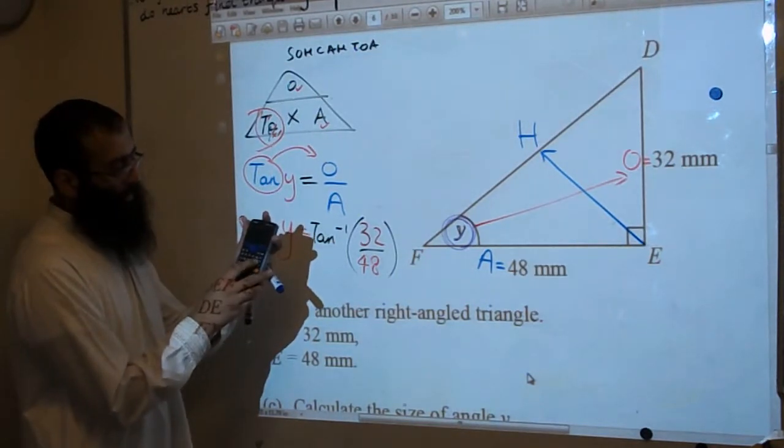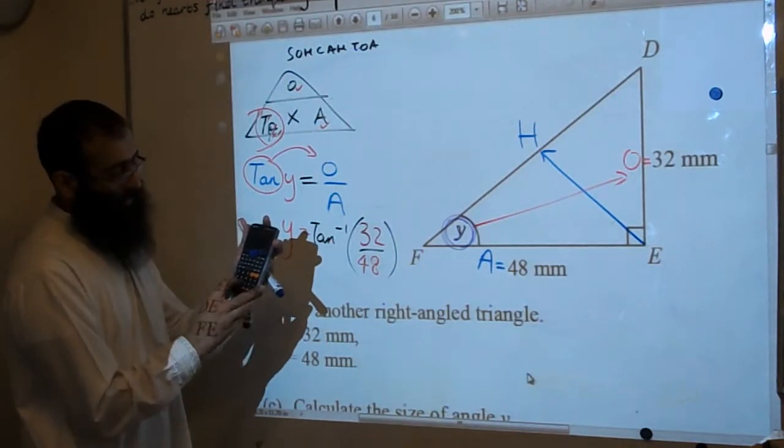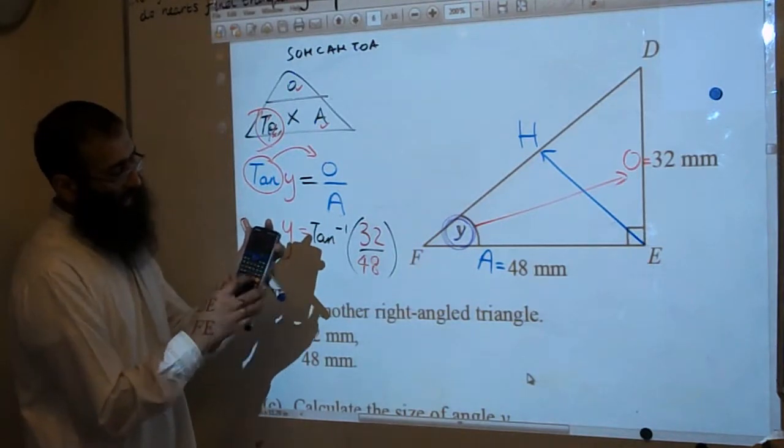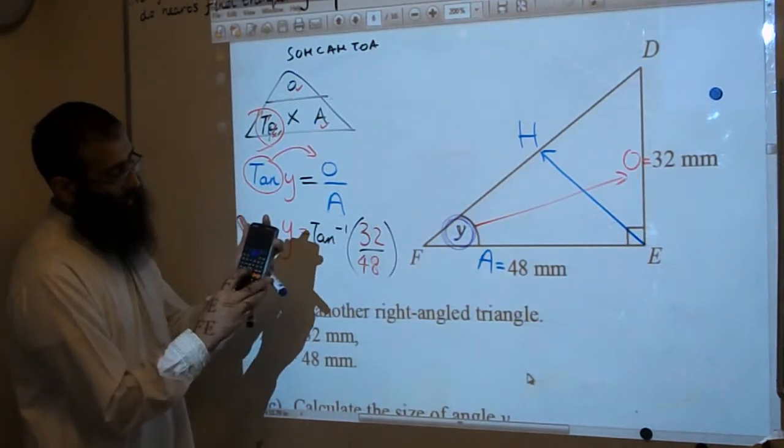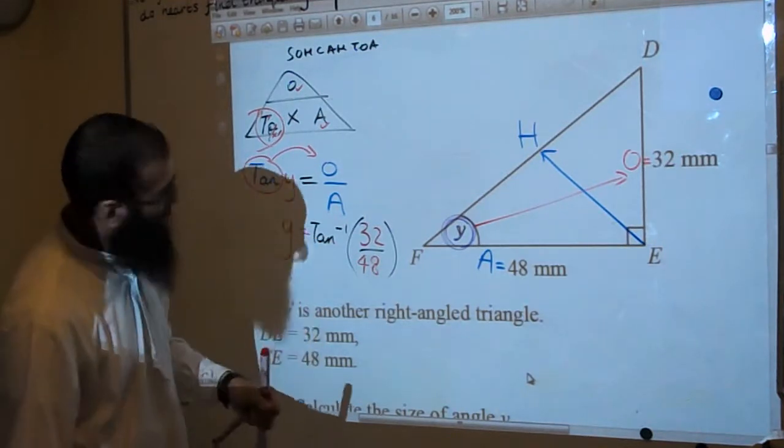Press shift. Press shift first, then the tan button. Then you press your fraction button, and then you type in 32, down, 48, down again, bring the cursor back up. Press the bracket, press equal, we'll get an answer of 33.69006.